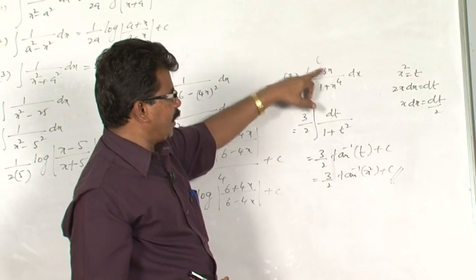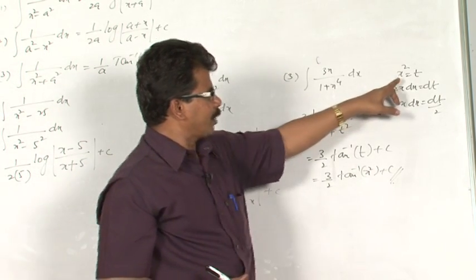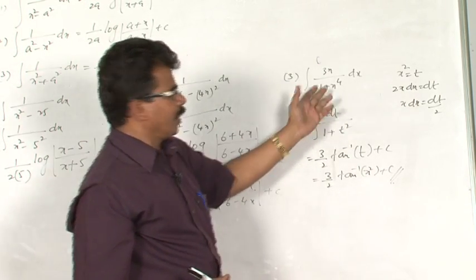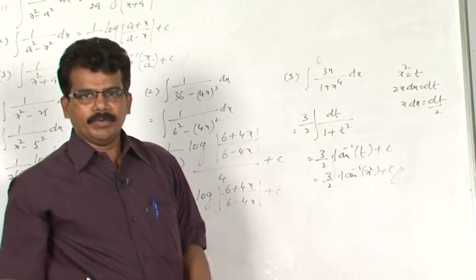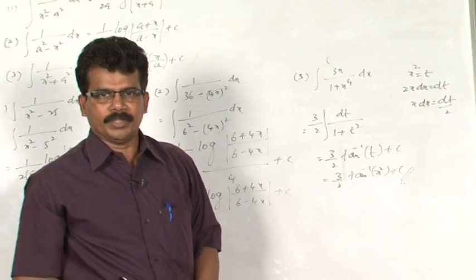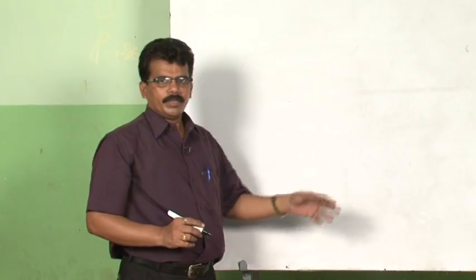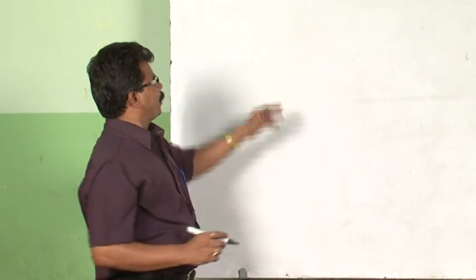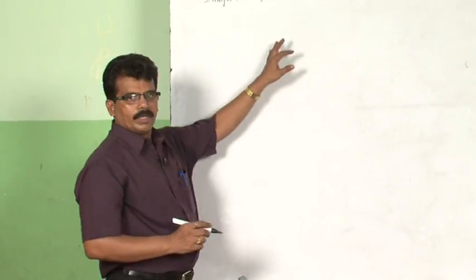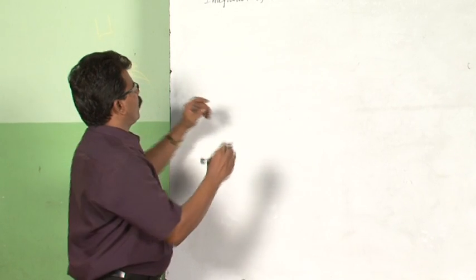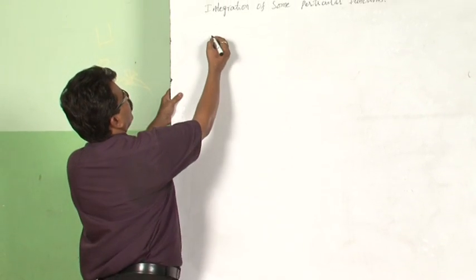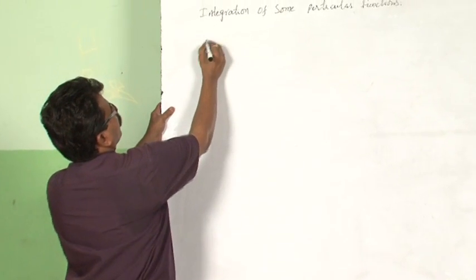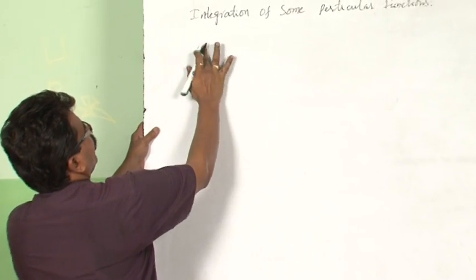If x is there, here we have assumed x square is equal to t and so on, we have to find the solution. Continue with integrations of some particular functions. Let us see some more functions of this type.